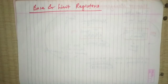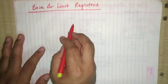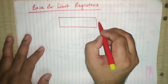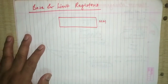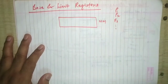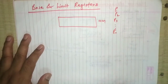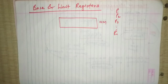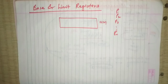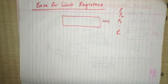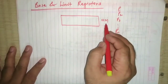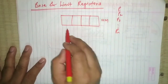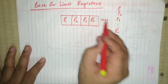In this regard we have few terminologies: base and limit registers. Consider this main memory — I have divided it such that process one, process two, process three, and up to process n can be adjusted. The capacity depends on different machines, but say the capacity is for four processes, so the main memory is divided into four sections.